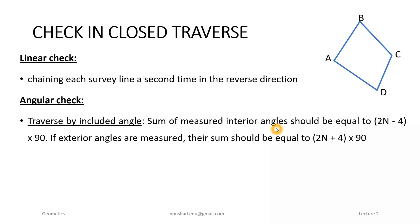Start using the inner angles. This is the angle for which we are going to calculate the sum. The sum should be equal to (2n − 4) × 90°, where n is the number of sides. For example, here we have 4 sides of the polygon. The interior angle sum will be 360 degrees.